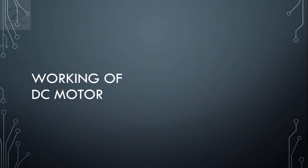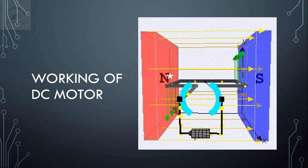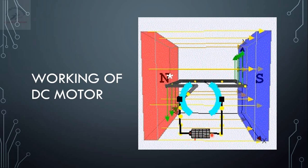Now we have a single coil machine with two poles — just for representation, I have considered this figure. Here are the magnetic poles wound by the field windings. This coil is called the armature; usually in a motor there will be many coils, but to understand we have considered only one. A battery is shown here representing the DC supply. This cyan colored component is the split ring, which in a machine we call the commutator.